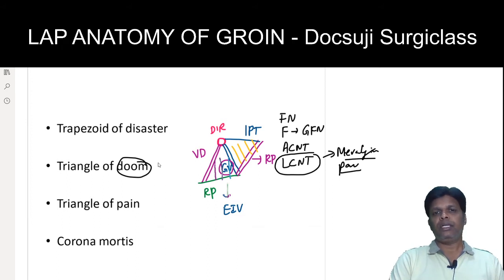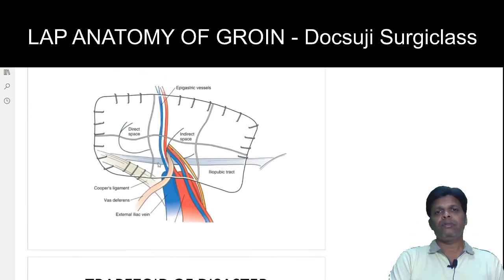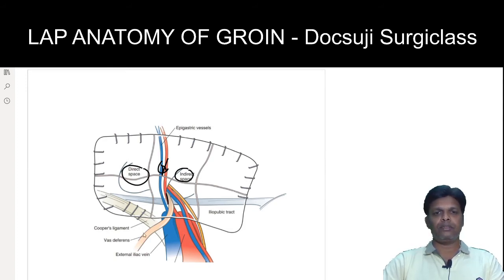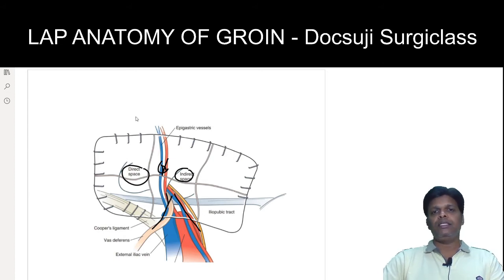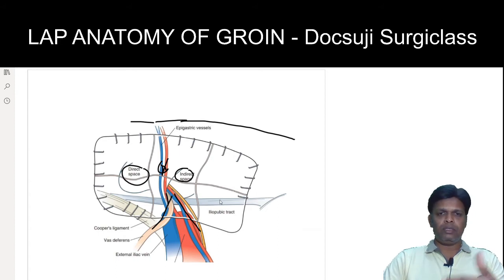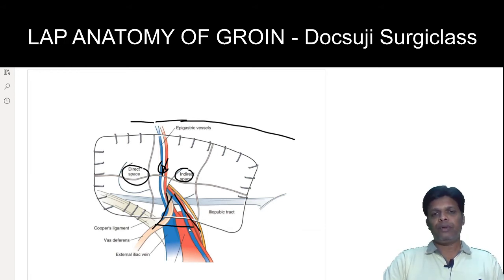Looking at this intraoperative picture of the laparoscopic groin region, you can see the inferior epigastric vessels, the indirect space, and the direct space. The vas deferens forms the medial boundary, and the gonadal vessels form the lateral boundary. The peritoneum is raised from just above the deep ring up to the anterior superior iliac spine, creating an opening and a pre-peritoneal pouch, with the lower part of the peritoneum forming the lower boundary.